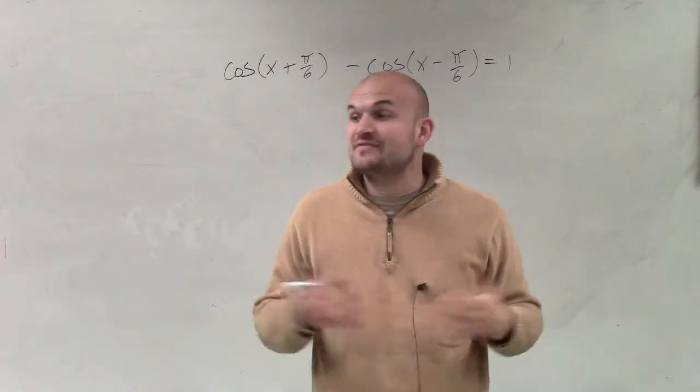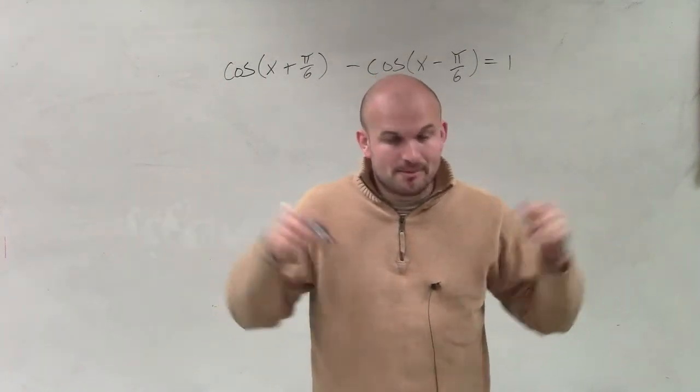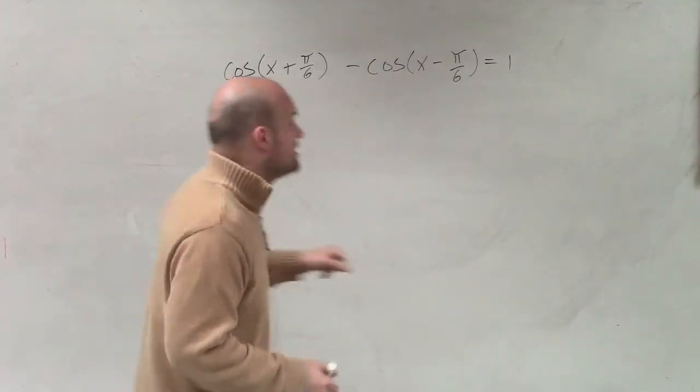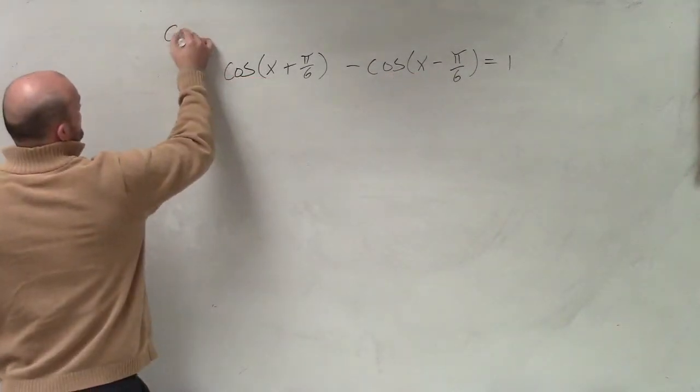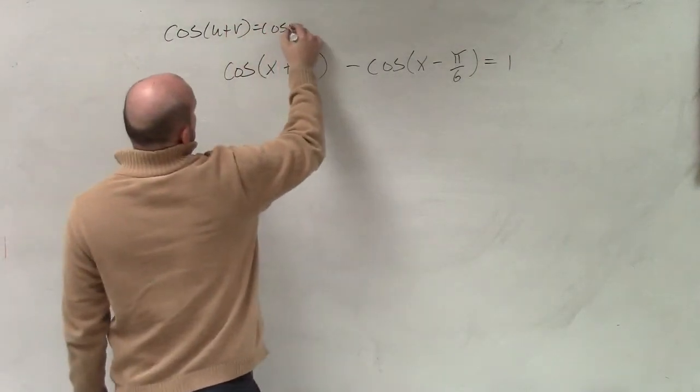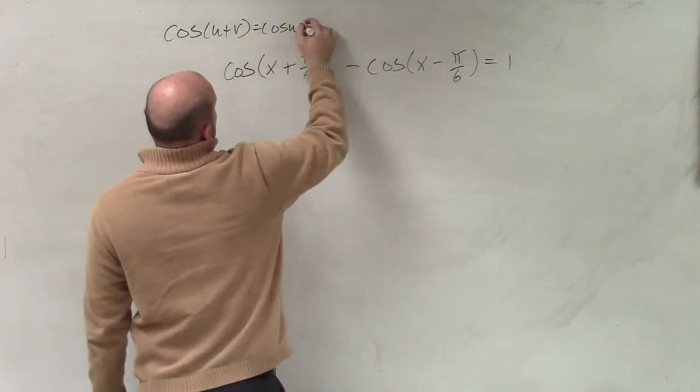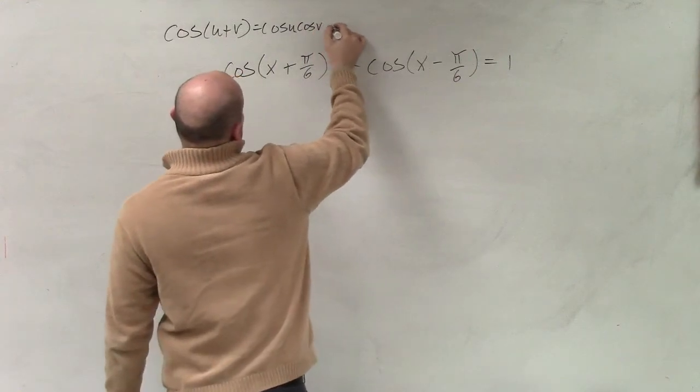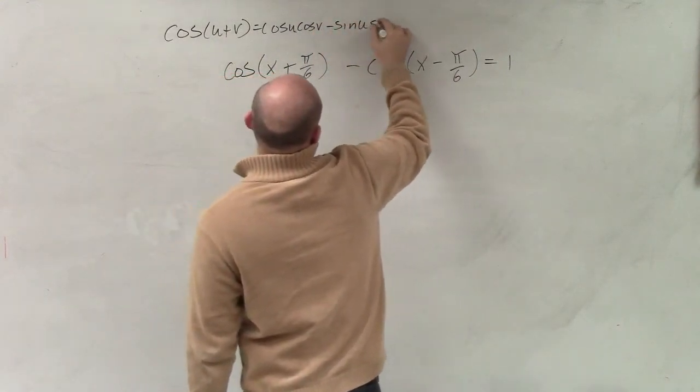We have the sum and we have the difference, right? Again, you will be provided the formulas, but let me write them down so we make sure we're using the correct ones. So the cosine of u plus v equals cosine of u times cosine of v minus the sine of u times the sine of v.